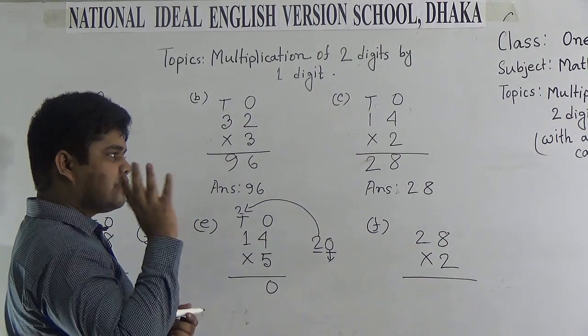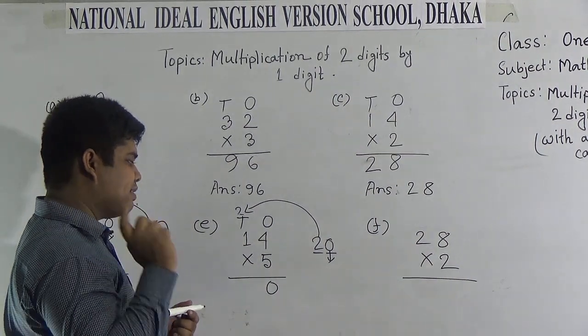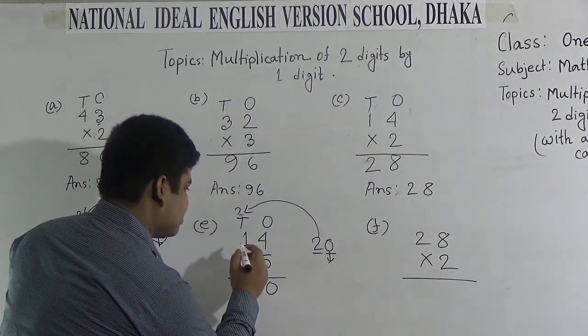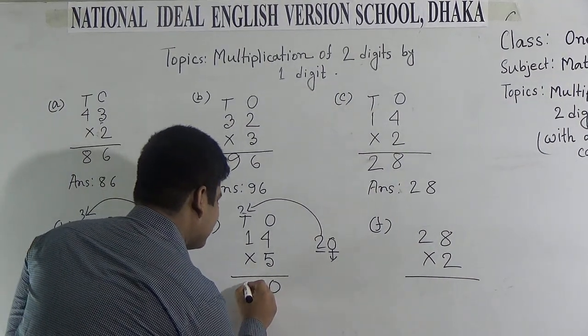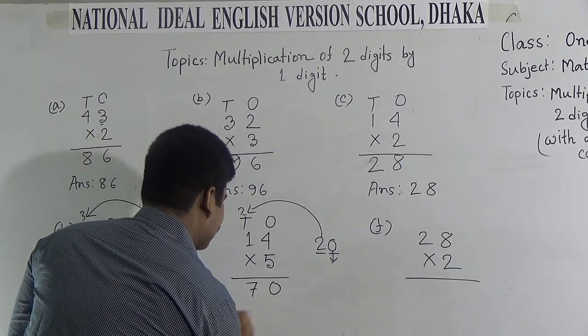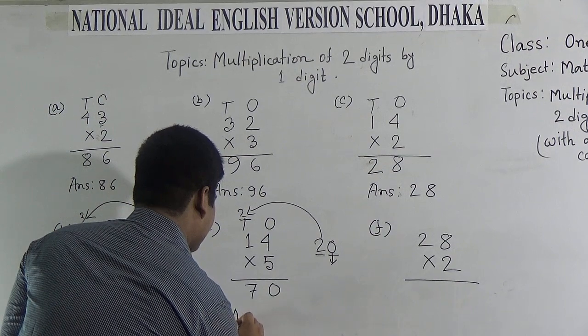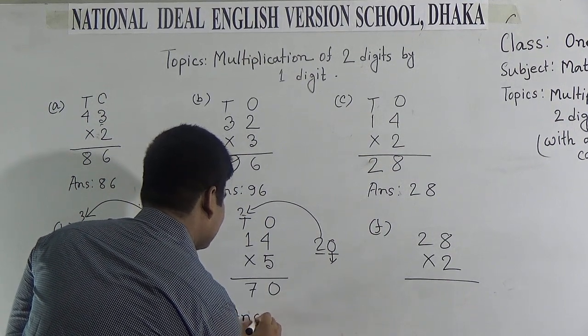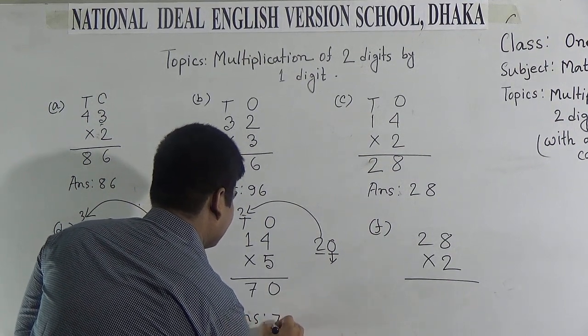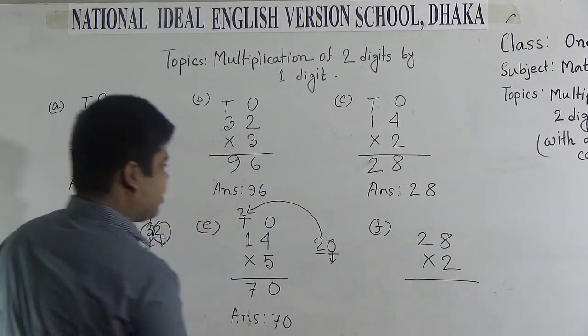If we add 2 with 5, we get 7. So, 7 is placed in the 10's place. And 70 is the answer.